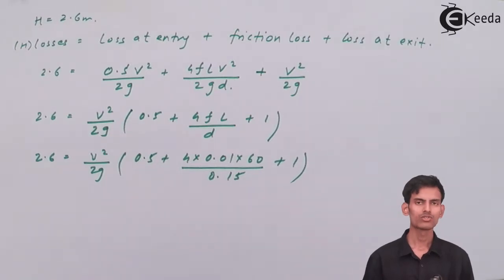You can take v² / 2g common from all three terms, and you'll be left with 0.5 plus 4fL/d plus 1. After simplifying and putting everything into your calculator, you will get the value of velocity.